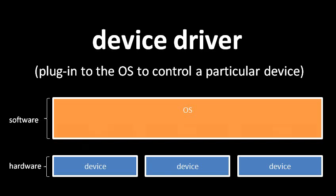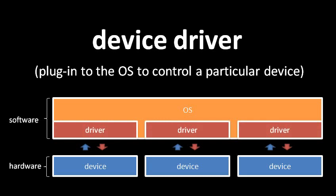These pieces of code are called device drivers. An individual driver knows how to drive, how to control one particular device. An interesting question is who's going to write all of these device drivers? Well, very often it's the manufacturer of the device who ends up writing the device driver.